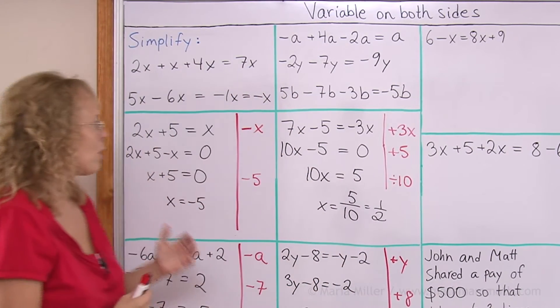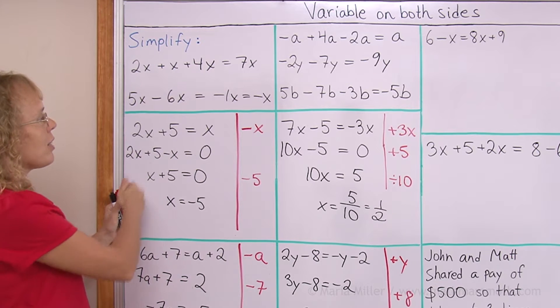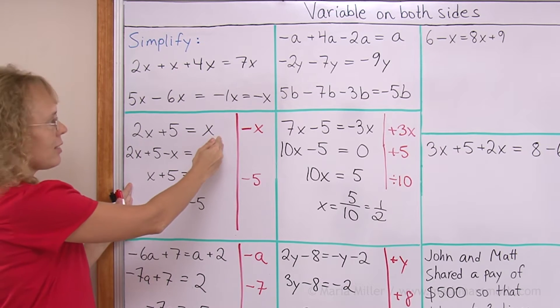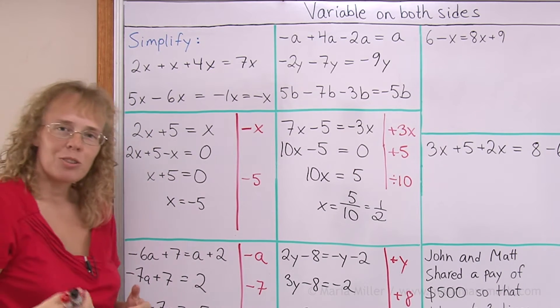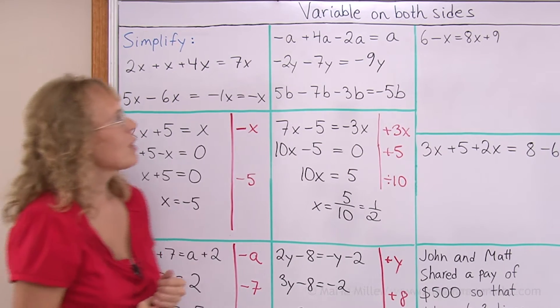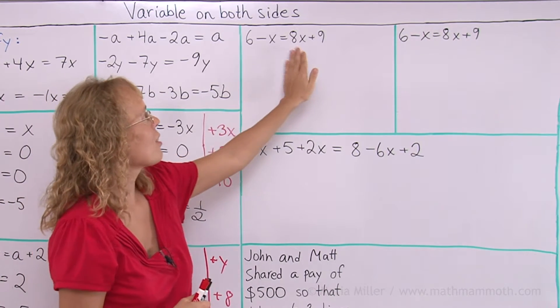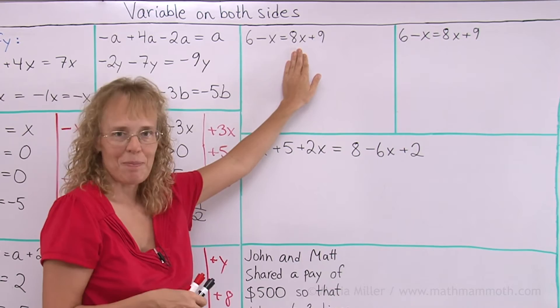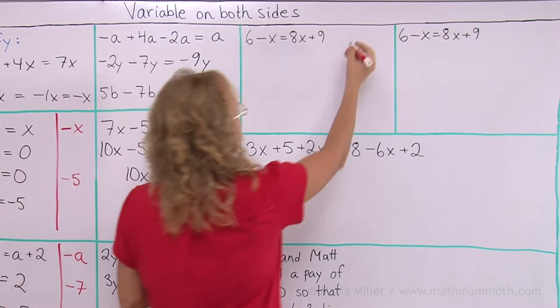Over here I was always gathering my x-term on this side, and if x was on this side, I got rid of it. X-term, either x or negative 3x or whatever, but I could do it just the other way around too. I could get rid of this x on this side and just gather my x's on this side. So I'm going to do it both ways with this equation, so you can see the difference.